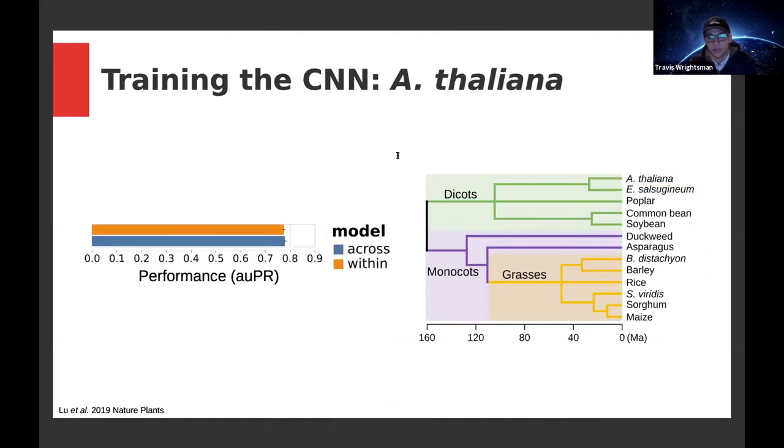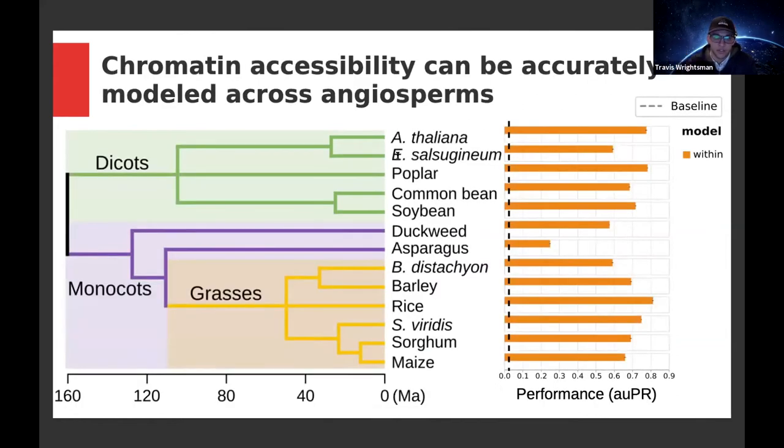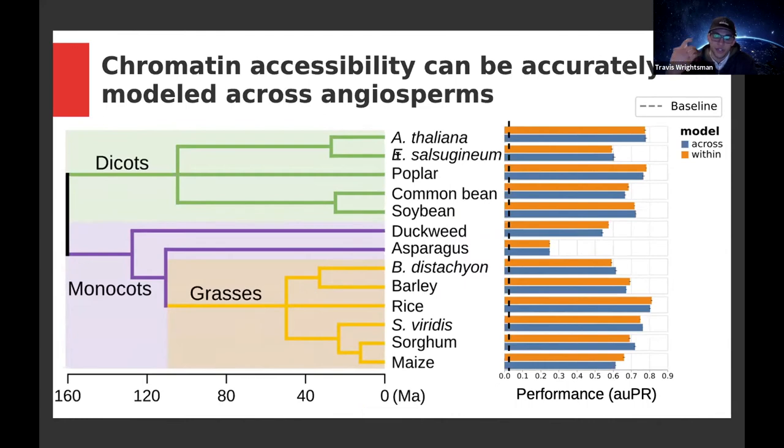Here is what the example performance would look like for the Arabidopsis within species and across species model. When I do the results across all the angiosperm species I've sampled, we see that despite there being variability in performance across species, they're all doing much better than a random baseline classifier shown in the dashed line. When we show the across species model performance, in every species we see that the across species model performance is very equivalent to the within species model performance. This suggests that without seeing any open chromatin data from a given species, we are still able to utilize angiosperm open chromatin data to accurately and precisely predict the open chromatin in that unobserved species.